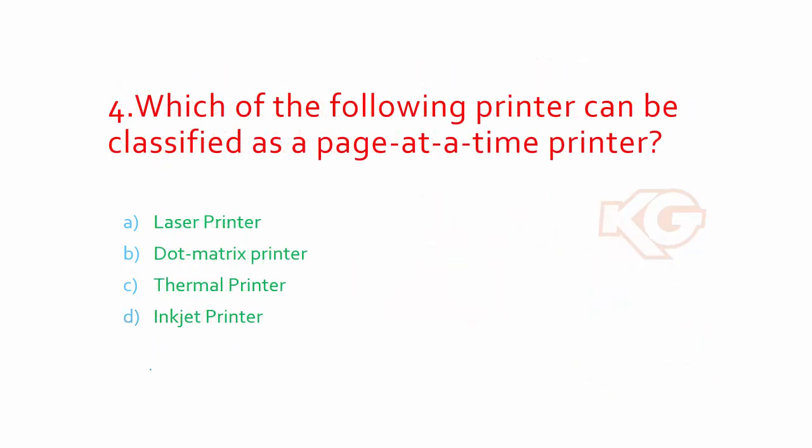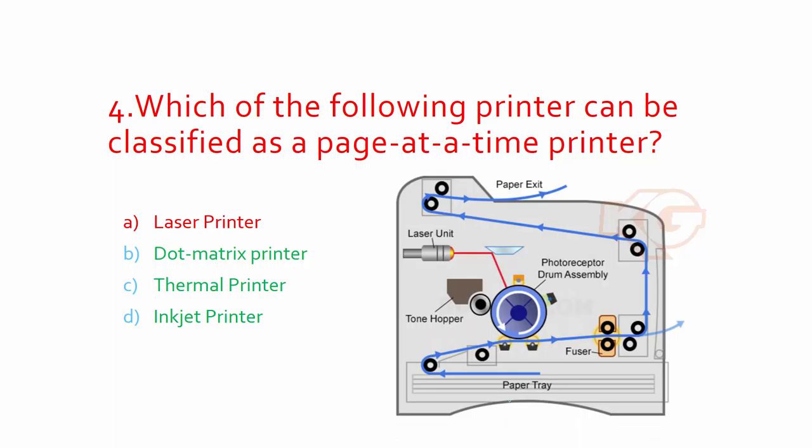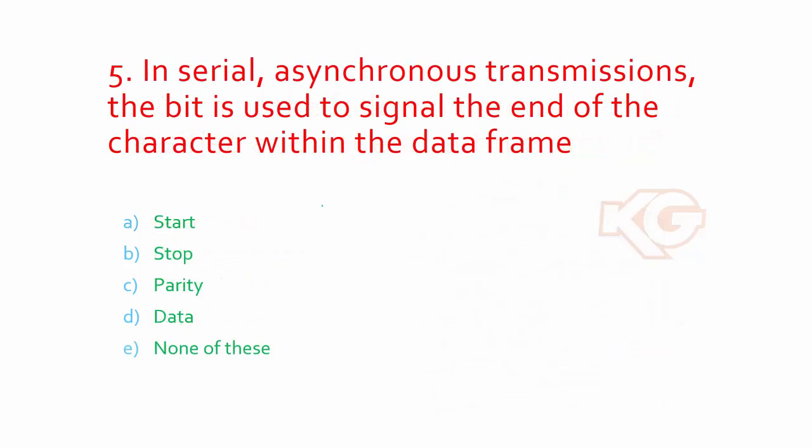Which of the following printers can be classified as a page-at-a-time printer? The options are shown over here, but the best option is laser printer. We can see the inner picture of how this functions. You can see the paper tray is coming from this direction, it goes all the way and comes out. So the page-at-a-time printer should always be your laser printer.